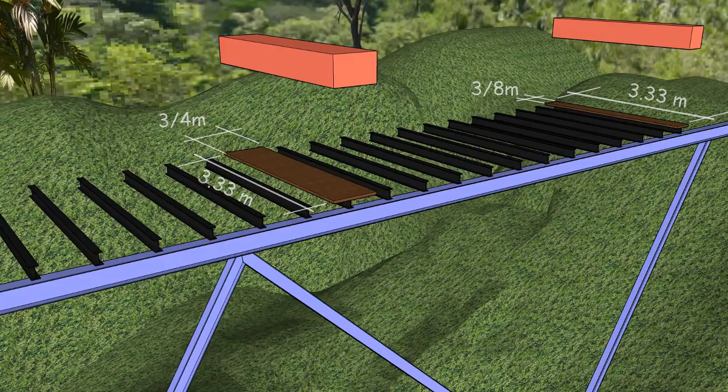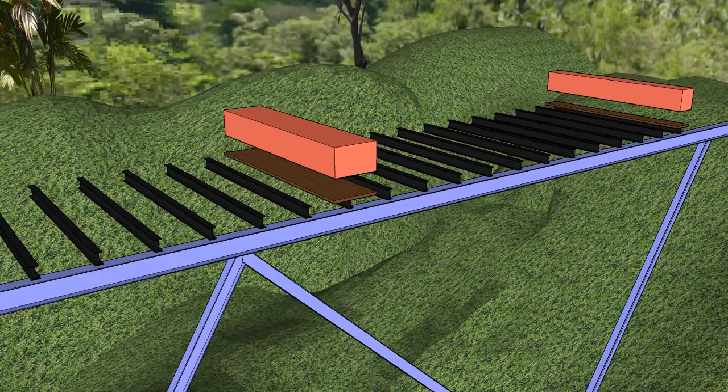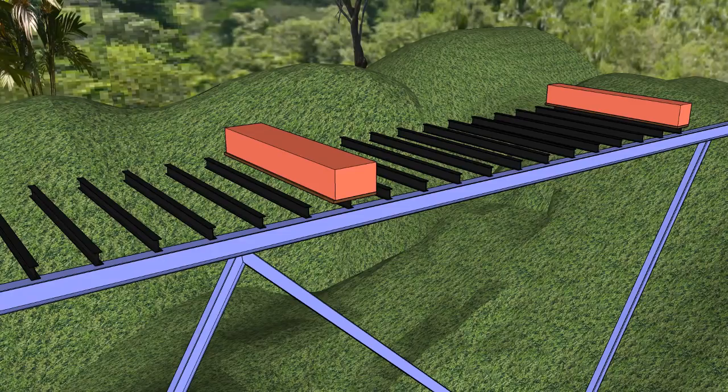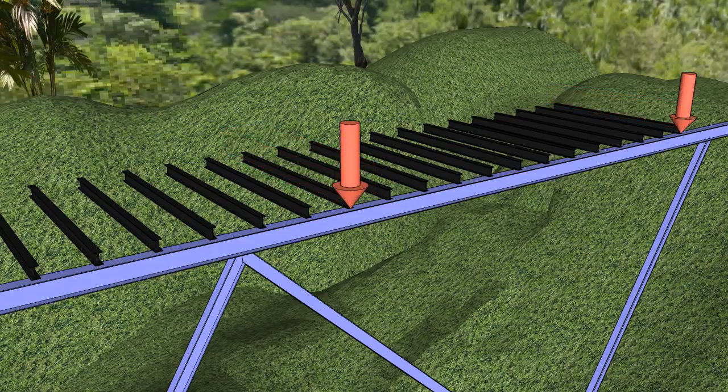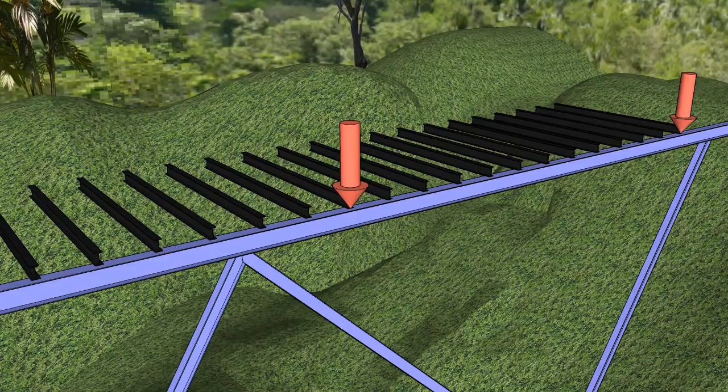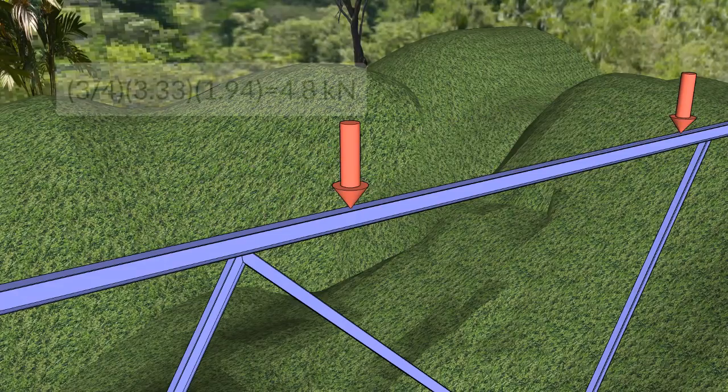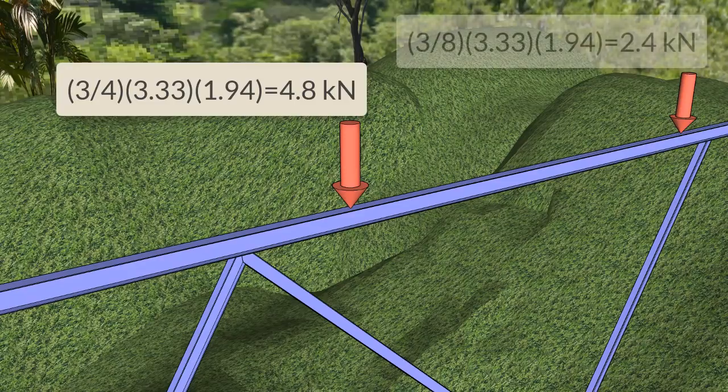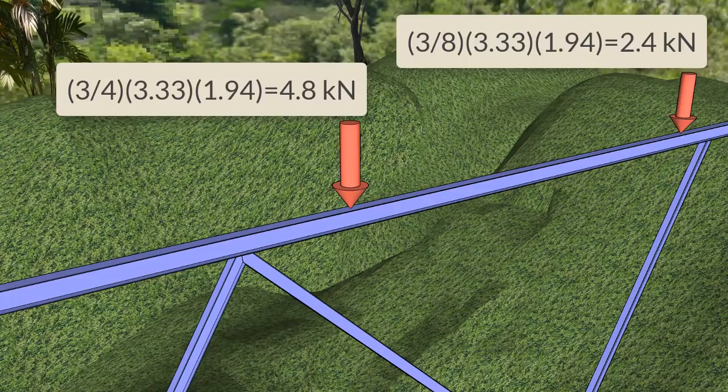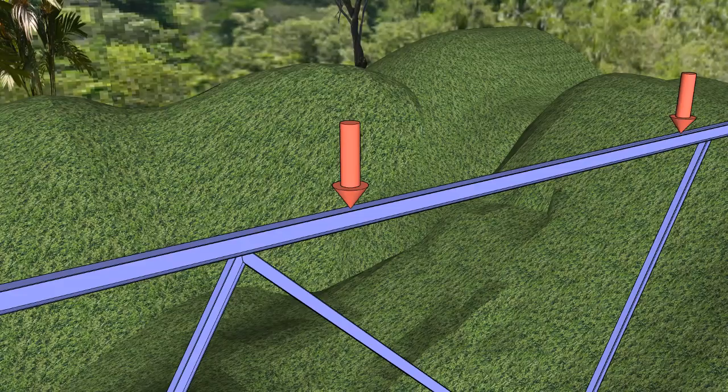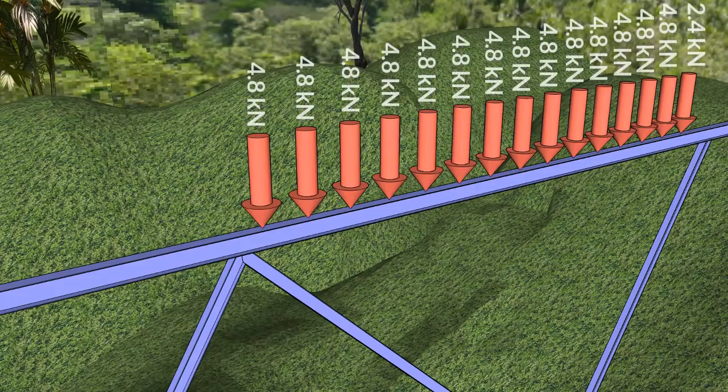Each tributary area is subjected to a uniformly distributed load block. Let us replace each block with a concentrated load that would act directly on the long horizontal beam. The magnitude of the concentrated load equals the tributary area times the magnitude of the live load. This gives a concentrated load of 4.8 kilonewtons for each interior beam and 2.4 kilonewtons for the far end beam, so we need to analyze our frame under this set of loads.